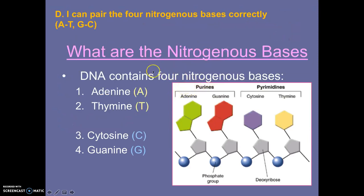What are the nitrogenous bases? DNA has four different nitrogenous bases. Two of them are adenine, represented with an A, and thymine, represented with a T. Then we have cytosine with a C, and guanine with a G. Those are the four nitrogenous bases — only four — that are present in DNA. Cytosine and thymine are smaller, however adenine and guanine are a little bigger.